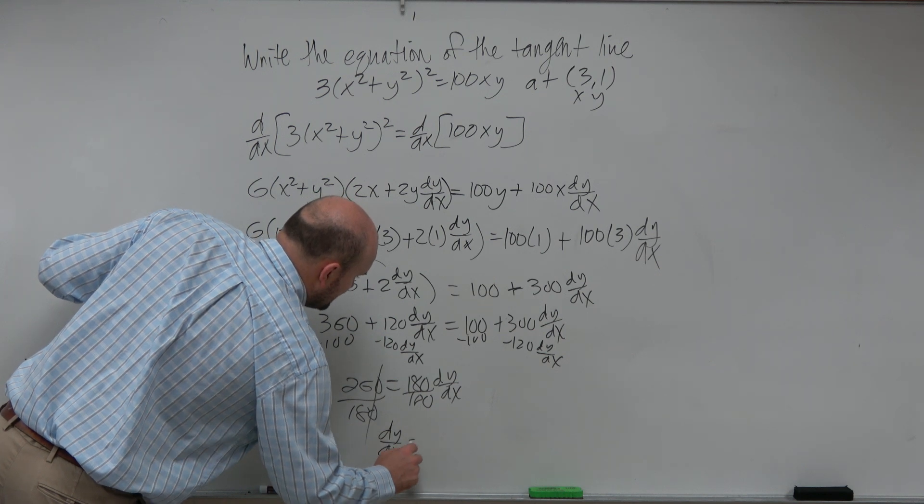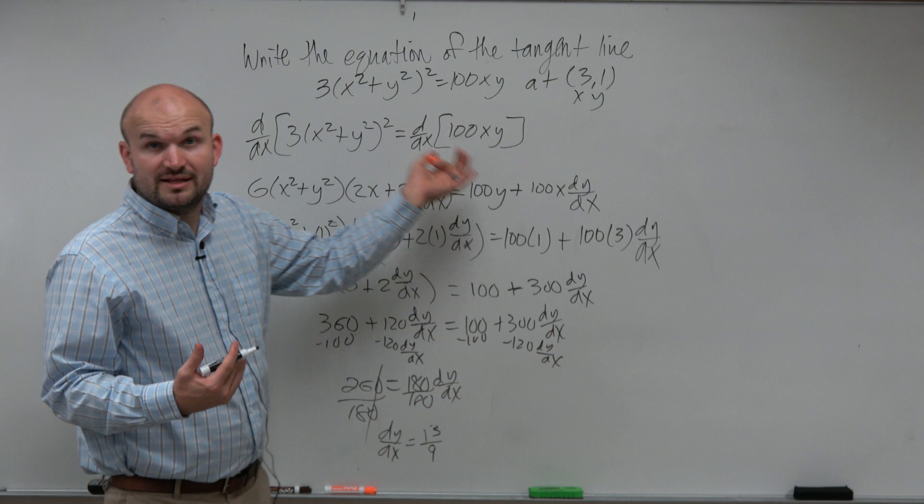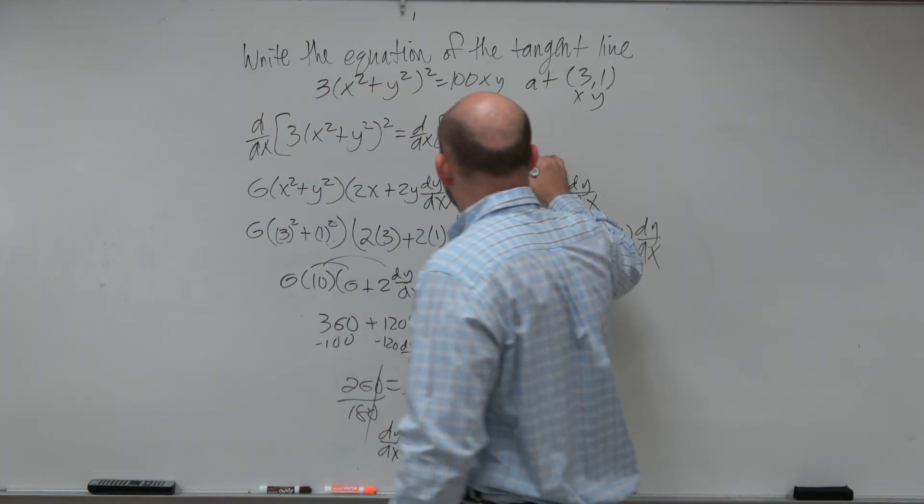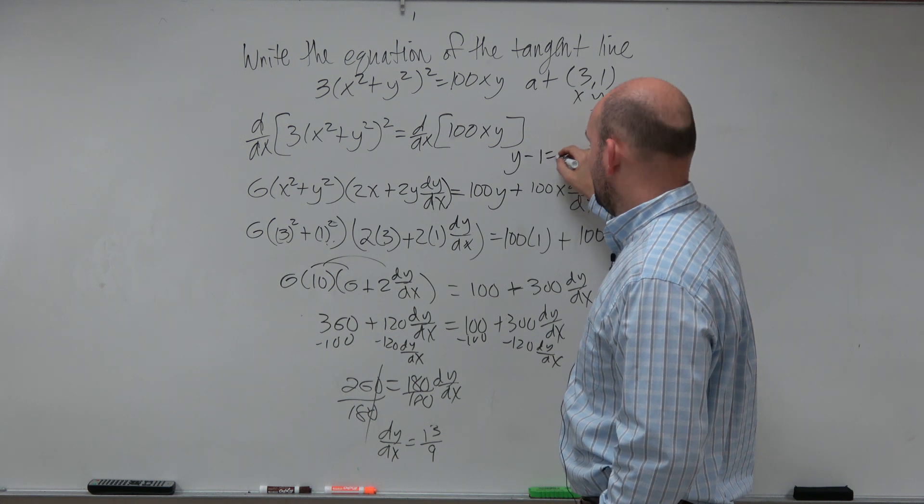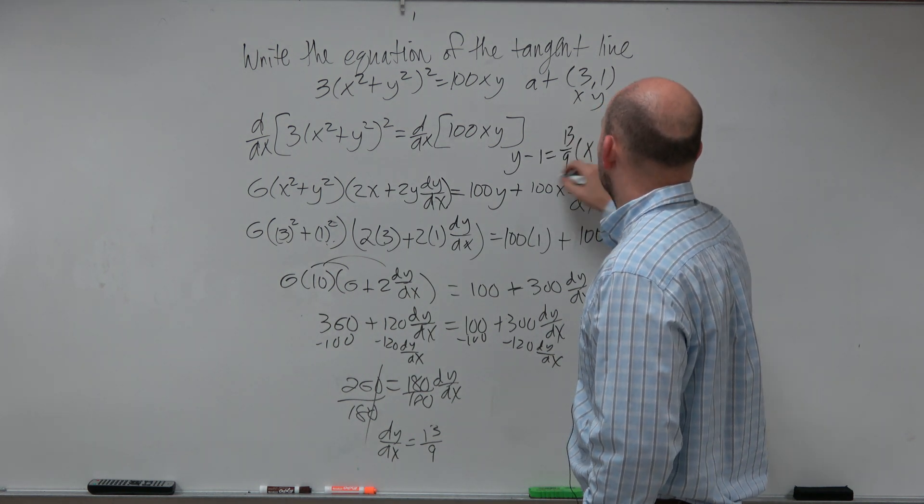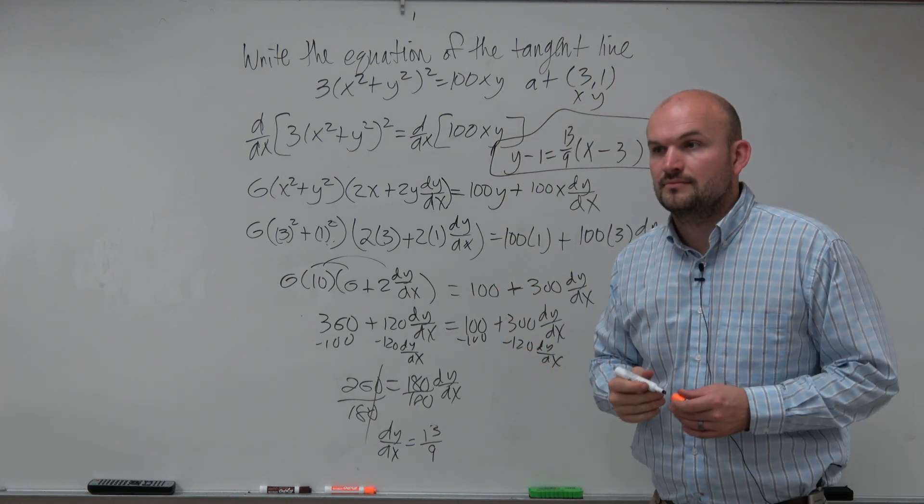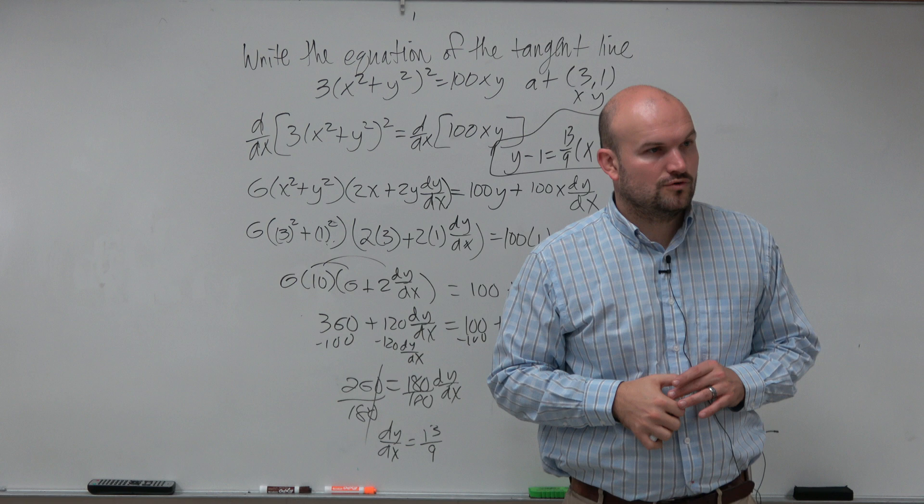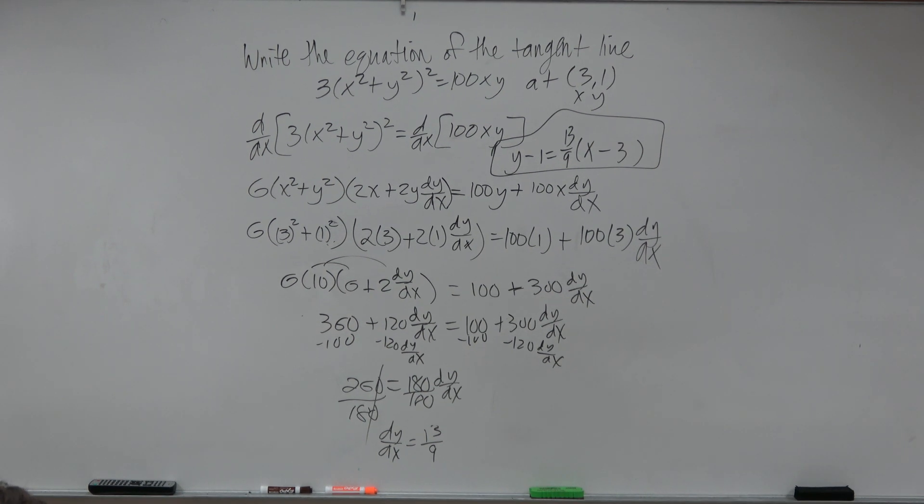So dy/dx equals 13 ninths. So therefore, if I wanted to write the equation, it's going to be y minus y₁ equals 13 ninths times x minus 3. Okay? So there's nothing...